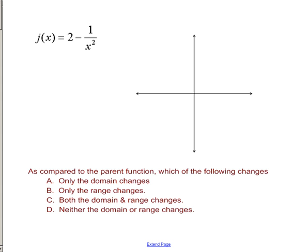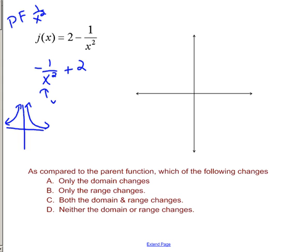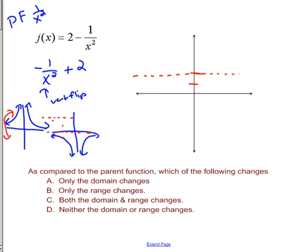Here's 2 minus 1 over x squared. It's easier to think of this as negative 1 over x squared plus 2. My parent function is 1 over x squared — my starting point, the volcano shape. Transformation number 1 is the negative, which is a vertical flip over the x-axis — it's up and down. Then I take that flipped graph and go up 2. Every y value is 2 higher, and the key feature that ends up 2 units up is my horizontal asymptote, now at y equals 2. The vertical asymptote stays the same.